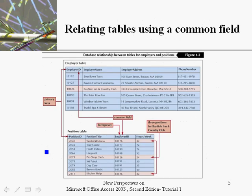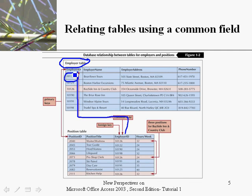You'll hear the term relational database. In a relational database you've got multiple tables that share similar fields. For example, here's our employer table, which is also sharing a field with the position table. So the same information — employer ID — is also being displayed down here in the position table.